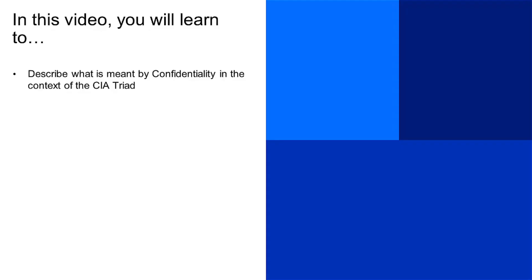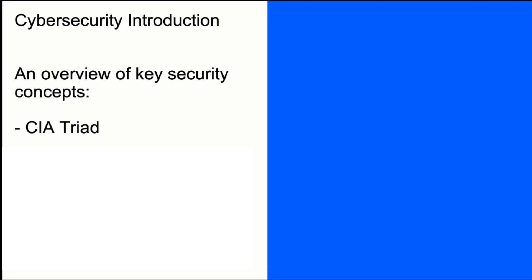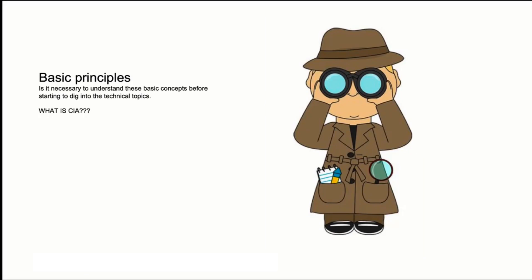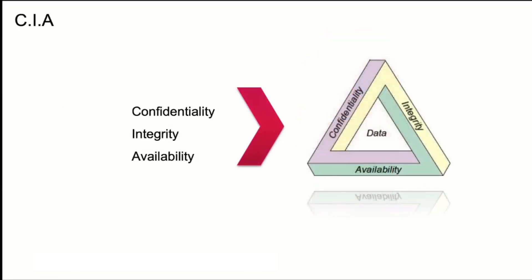In this video, you will learn to describe what is meant by confidentiality in the context of the CIA triad. We are going to talk about the key concepts in the cybersecurity world, especially something related to a term commonly known as the CIA triad. First, we need to understand that these three letters mean everything in cybersecurity. C for confidentiality, I for integrity, and A for availability.